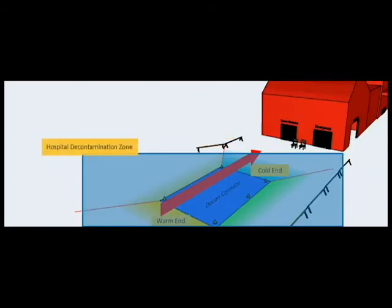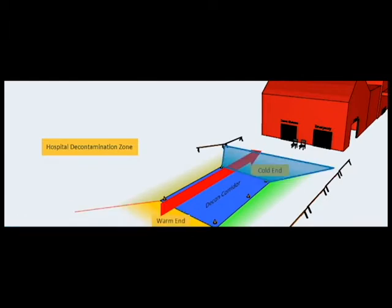For planning purposes, the hospital decontamination zone is typically divided into three distinct areas, commonly referred to as the warm end, the cold end and the decon corridor. The term warm implies a higher likelihood for the presence of a hazardous substance.